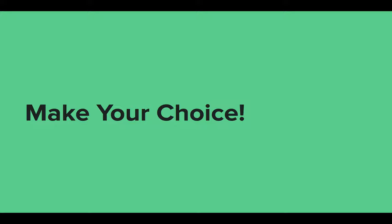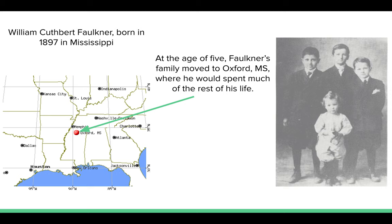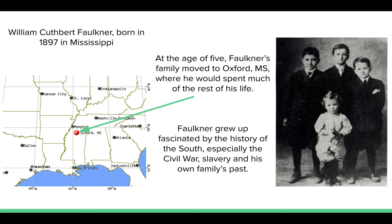William Cuthbert Faulkner was born in Mississippi in 1897. He was the eldest son of Murray and Maude Faulkner, and he grew up in the town of Oxford in Lafayette County. Faulkner was not a successful student, and he did not even manage to graduate from high school — but this should not be seen as a reflection of his intelligence or skill. In his early years, Faulkner was fascinated by the stories told to him by his elders, specifically about the history of the South, especially the legacy of the Civil War and of slavery, and also about his family in particular.